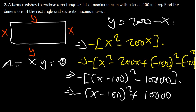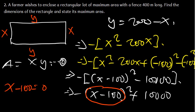We take what is inside the squared term and make X the subject of the formula. So X minus 100 equals zero, meaning X equals 100. That is the value of X.